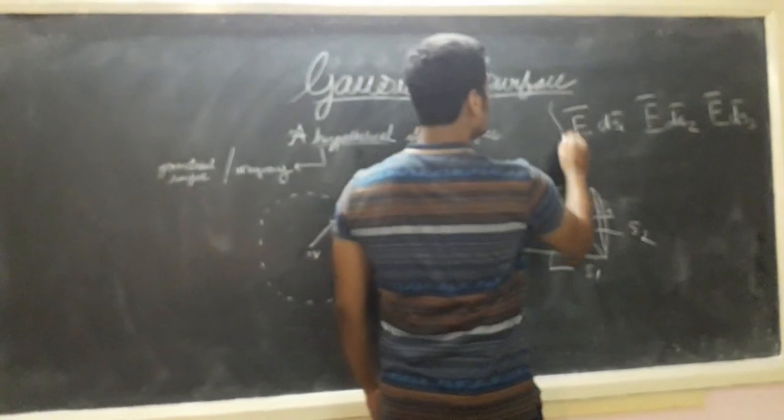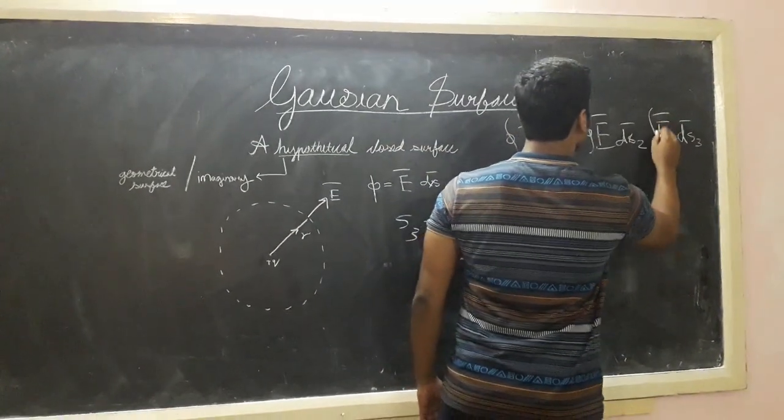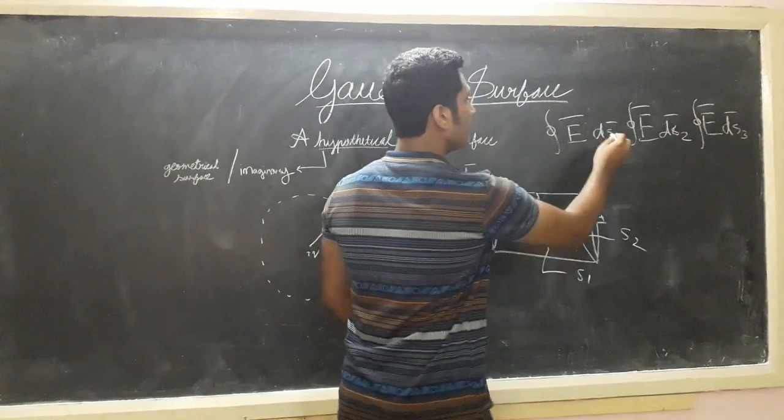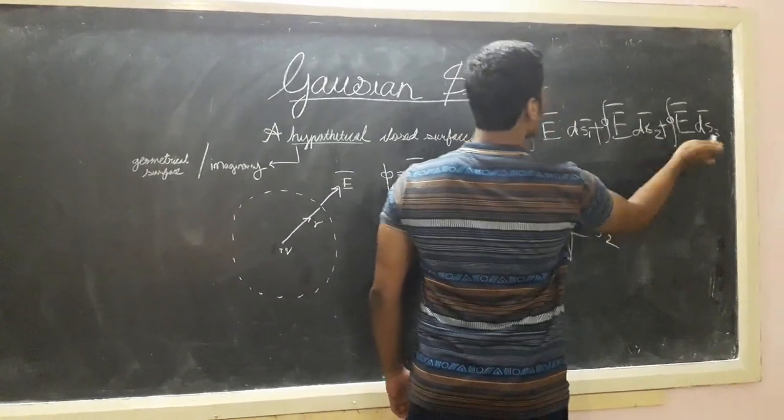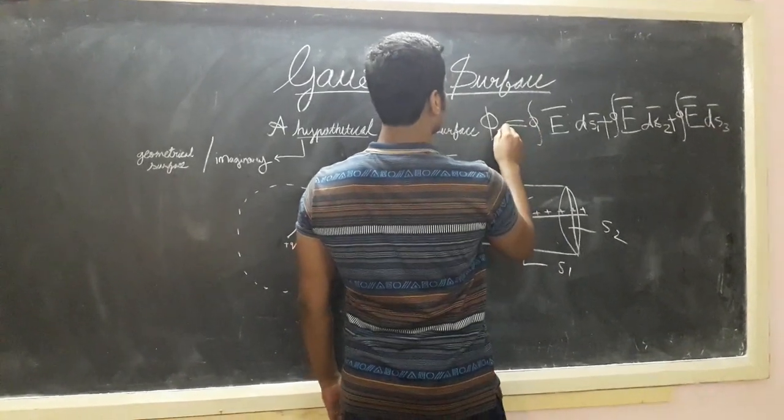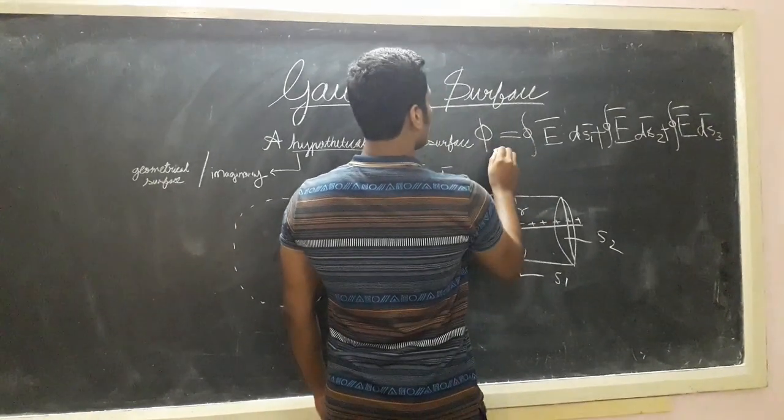All these three. And now we can integrate each and every term. And we will simply add. So we will add them, and this will give us our total flux of this line charge.